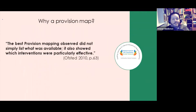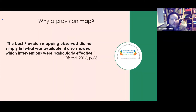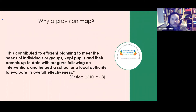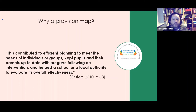A provision map is not just a list. It must include a review element — showing that the setting is reflecting on its provision, not simply stating everything is working brilliantly. Ofsted cited provision maps that contributed effectively as an example of good practice, noting their value when shared with parents, pupils, and the local authority. A good provision map can be a genuinely useful tool with all stakeholders.